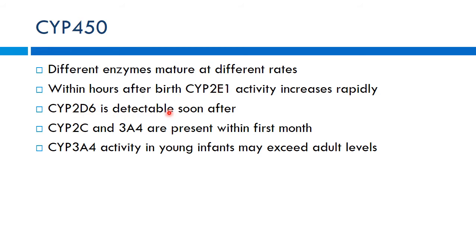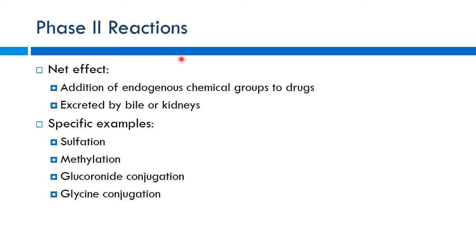CYP3A4 activity in young children may even exceed adult levels. Drug references for pediatric dosing have already factored in these enzyme maturation differences to ensure appropriate dosing. For phase 2 reactions — adding a group (sulfate, methyl, glucuronide) to make a drug more water-soluble for renal or biliary excretion — different pathways mature at different rates, and some are actually better developed at birth than they will be later in life.